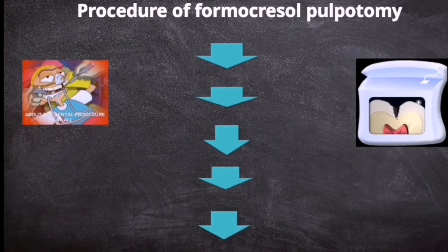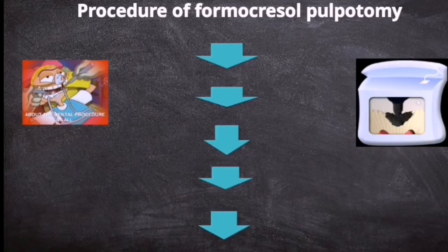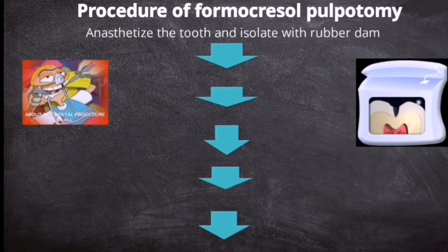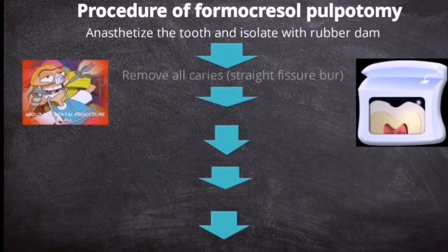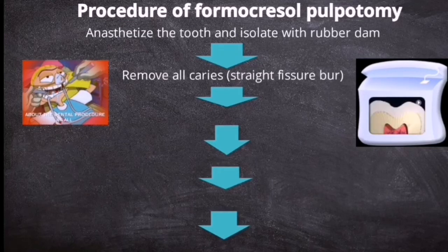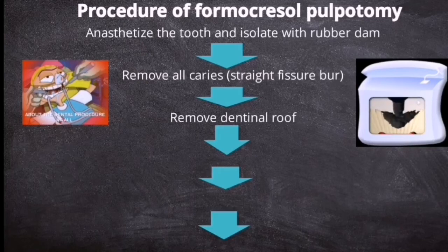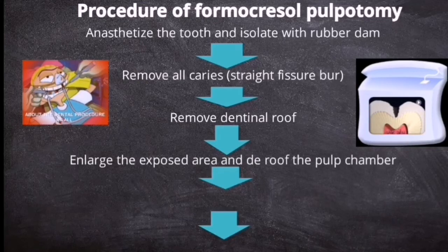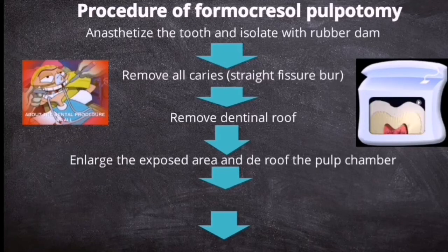Now let us see the procedure of formacresol pulpotomy step by step. First, you anesthetize the tooth and isolate it with rubber dam, then you remove all the caries. Preferably, we can use a straight fissure burr. Then you remove the dentinal roof. After you remove the dentinal roof, you enlarge that exposed area and de-roof the entire pulp chamber.